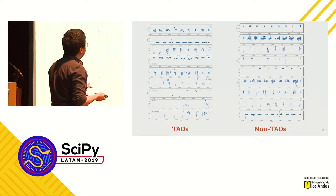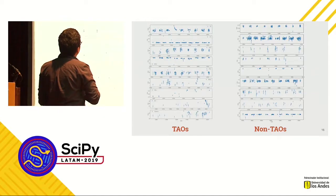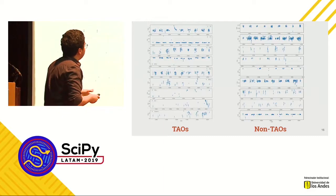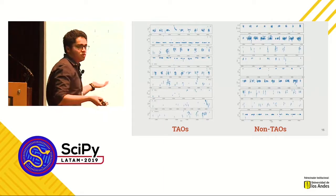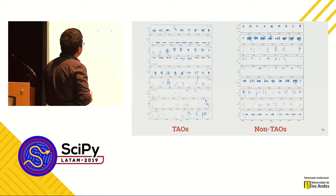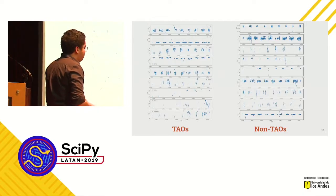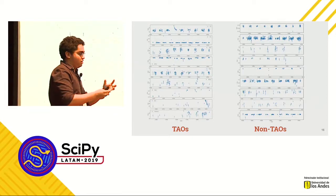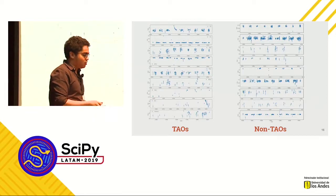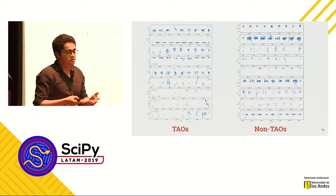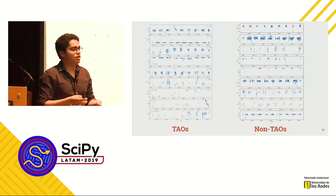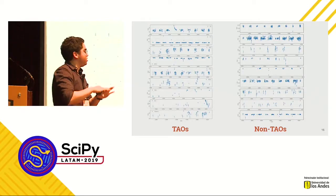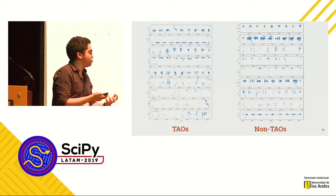These are some example light curves — these are all transients, and these are all non-transients. What I want to emphasize is that to the untrained eye, this is impossible to classify. The differences between the classes are very subtle, and the differences between examples of the same class are evident. In machine learning, this is known as a fine-grained classification problem — it's like classifying breeds of dogs rather than cats from dogs. It's a much harder problem because the differences are much more subtle.